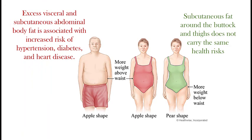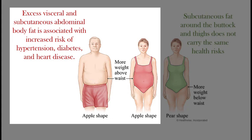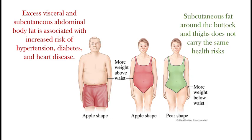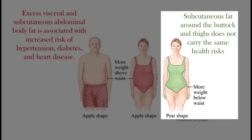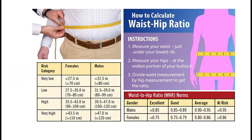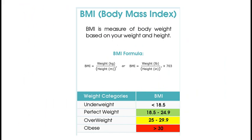The percent is important, but you also need to know where it's located, because abdominal, visceral, and subcutaneous fat is associated with increased risk of hypertension, diabetes, and heart disease. Subcutaneous fat around the buttocks and thighs does not carry those same health effects. A waist circumference measure can help you determine if you have excess abdominal fat. Body mass index, or BMI, is the weight-to-height calculation and can be useful for making quick assessments for an individual. It is one aspect to be considered along with other factors.